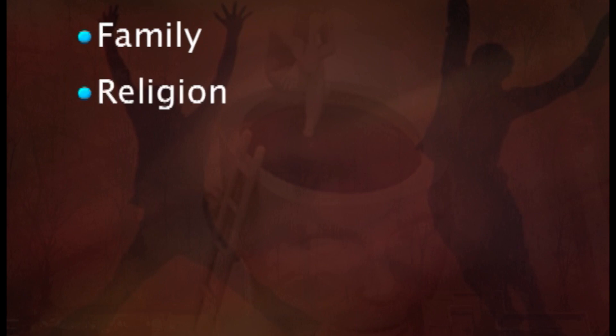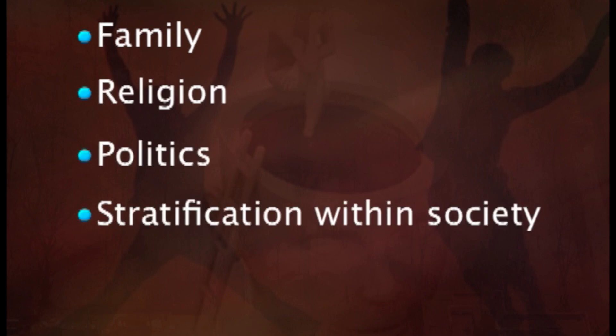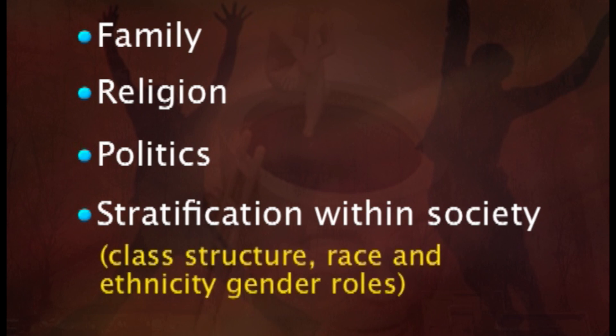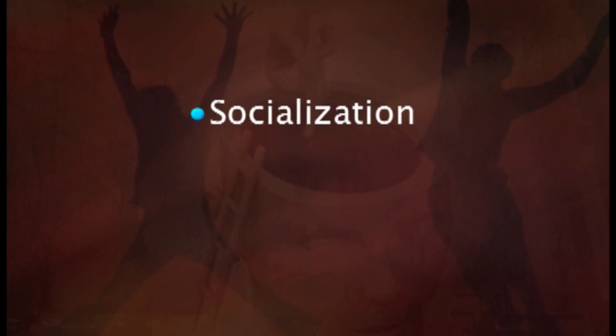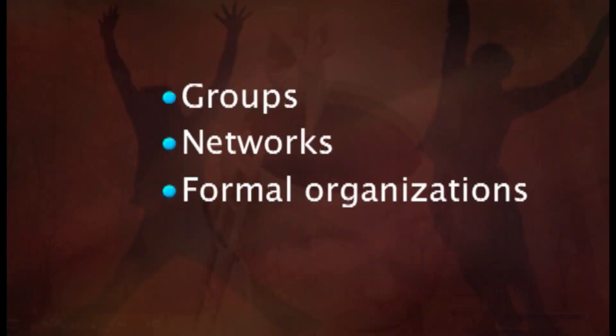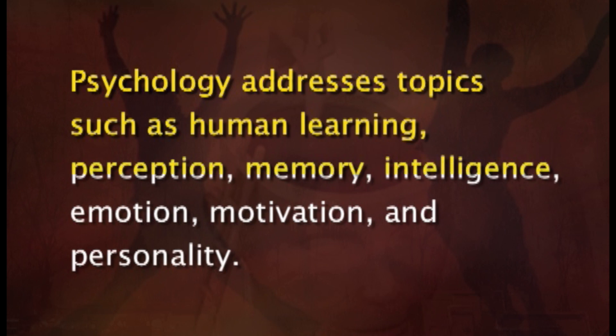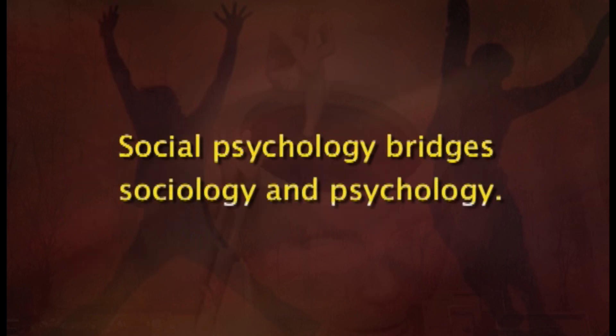Social psychology bears a close relationship to several other fields, especially sociology and psychology. Sociology is the scientific study of human society, examining social institutions such as family, religion, politics, stratification within society, race and ethnicity, and gender roles. It also examines basic social processes such as socialization, deviance, and social control, as well as the structure of social units — groups, networks, formal organizations, and bureaucracies. In contrast, psychology is the scientific study of the individual and of individual behavior. Psychology addresses topics such as human learning, perception, memory, intelligence, emotion, motivation, and personality.